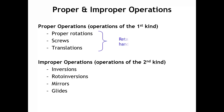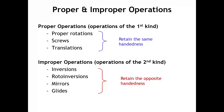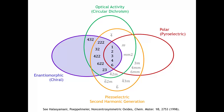Proper operations retain the handedness of a chiral object, whereas improper operations invert the handedness, giving an object of opposite handedness. If you want a crystal where all molecules are chiral with the same handedness, you are limited to space groups containing only proper operations. Returning to the Venn diagram, we eliminate all point groups with mirror planes and all point groups with rotoinversion axes, leaving just those in the blue circle.